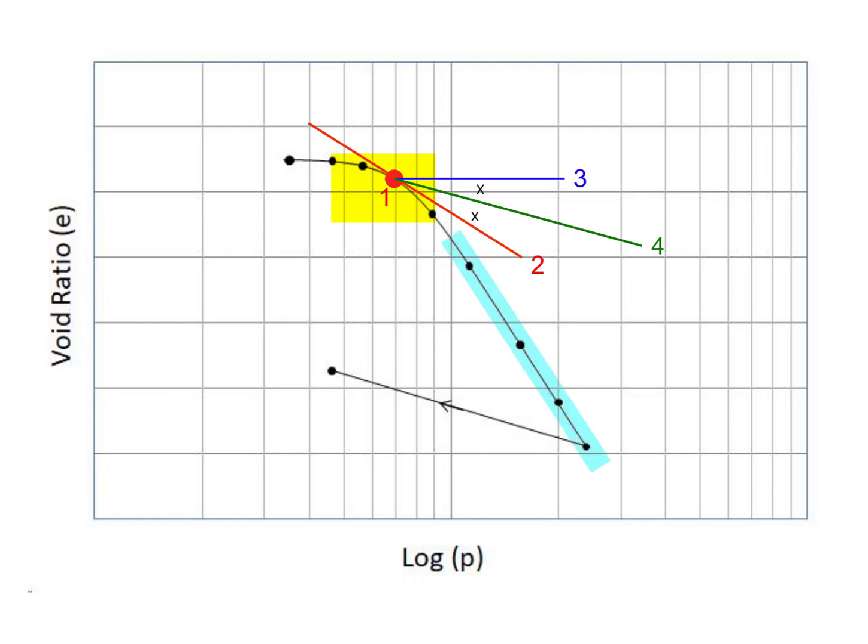From the straight portion of the e log p curve, extend the line. This is number five. From the intersection of line four and five.